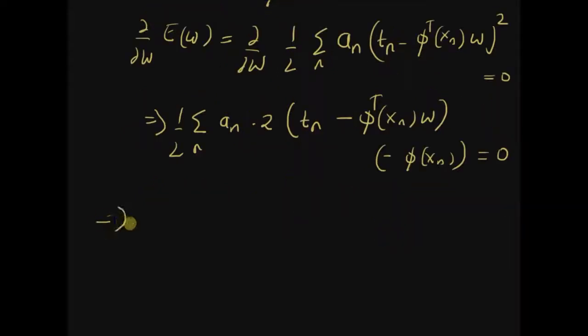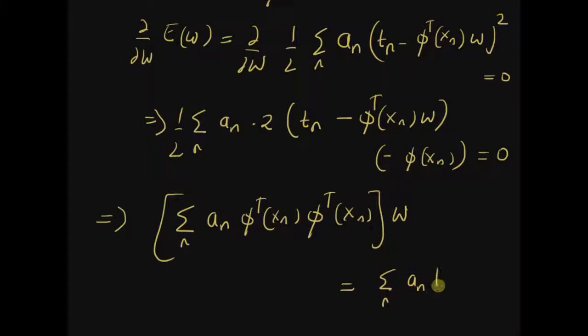So this equation can be rewritten as summation a_n phi transpose (x_n) multiplied by phi transpose (x_n) and then this sum is multiplied by the weight vector w, which is equal to the sum a_n t_n phi(x_n).